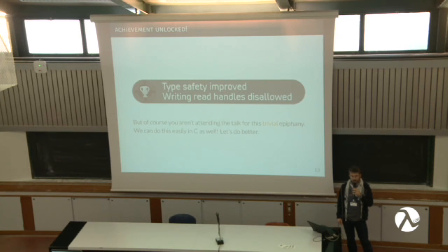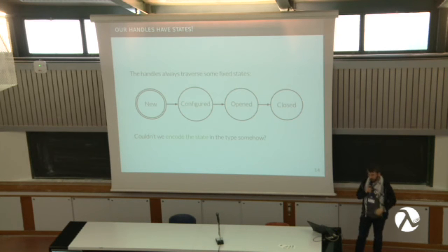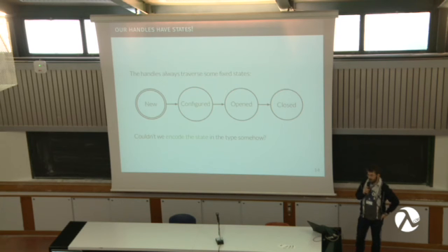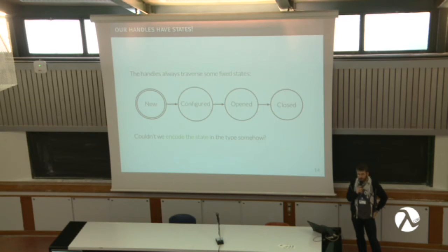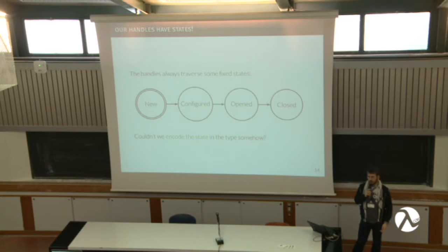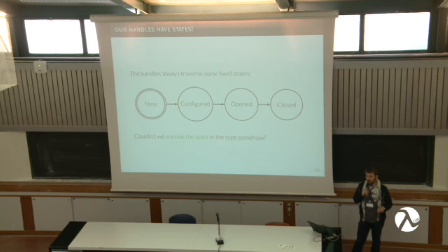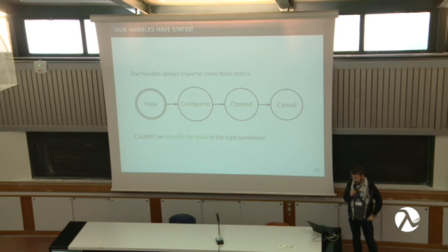You can do something similar in C too — you can just define different types. But we can do better, because the handles have different states. When you create them, they're in a new state. The most sensible thing to do is first configure them — say it's a zip file or tarball — and then you can open a file, attach it to a filename and read from it. Once it's opened, you can read and write, and then you also have to close it, putting them in a closed state.